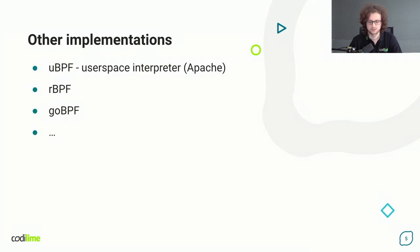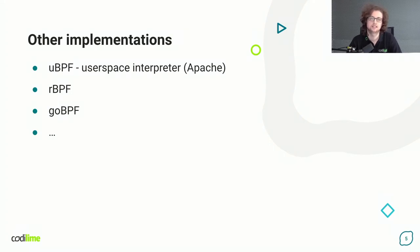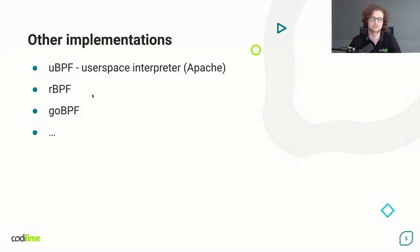There are also other implementations of BPF interpreters. One of the most popular is uBPF — it's user space, written in C. The difference from the Linux kernel version is the license: the kernel interpreter is released under GPL, so all programs using kernel features need to be released under GPL as well, which can be a limitation. That's why uBPF and other user-space implementations exist. They are not as fast as the kernel virtual machine, but they are out there. There is also rbpf and goBPF, which are very similar versions written in Rust and Go.